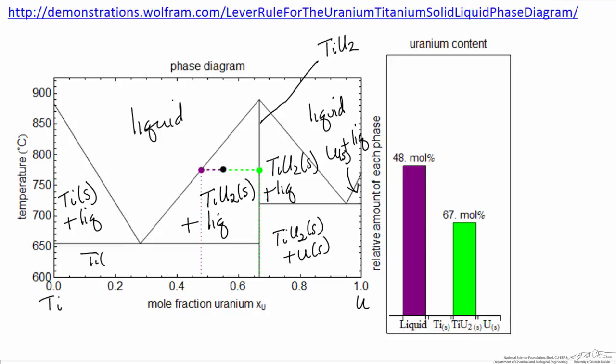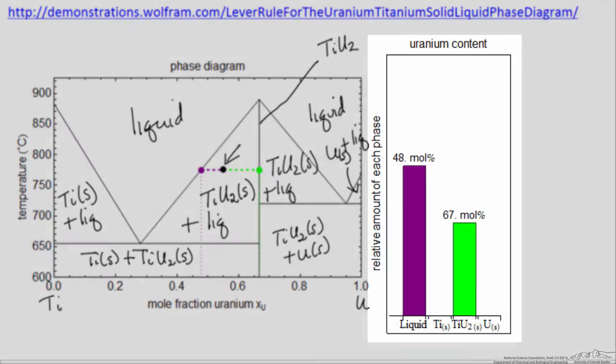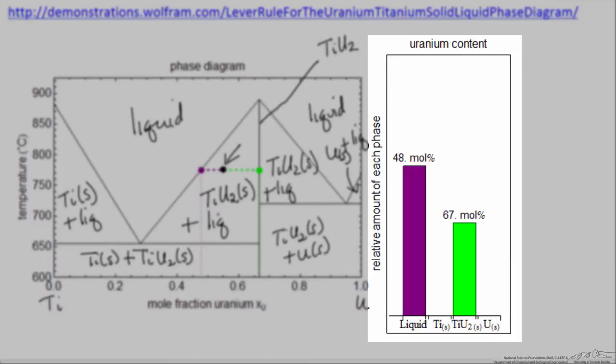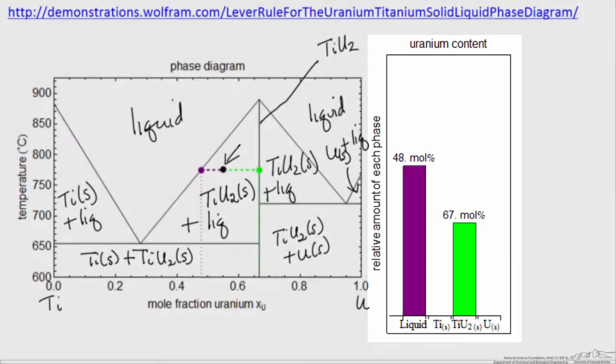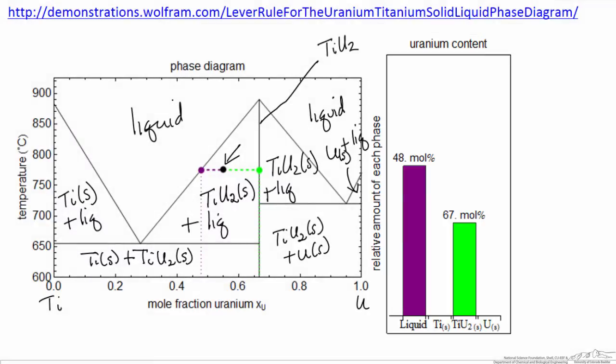And so if we look at the point here in that two-phase region, what that represents is so much liquid and so much of the stoichiometric compound. And over here are the relative amounts. We can see we have more liquid because this point is not at the center but is closer to the liquid line.